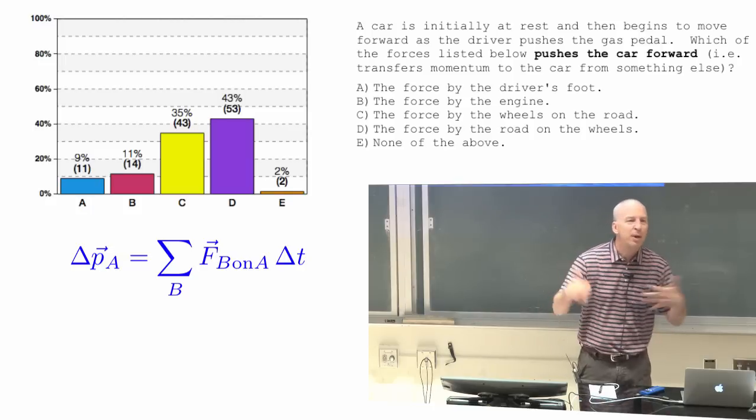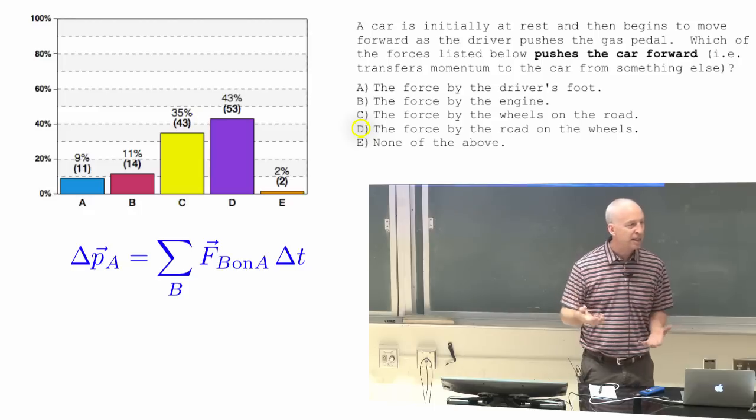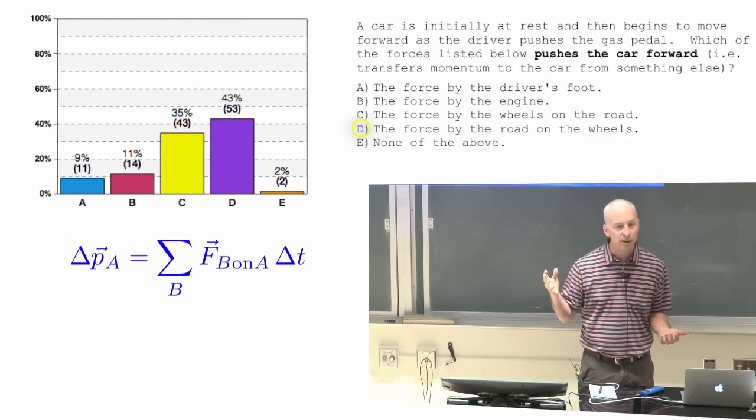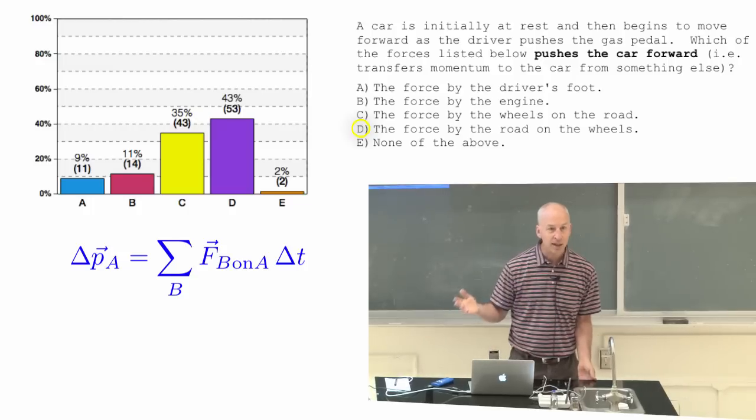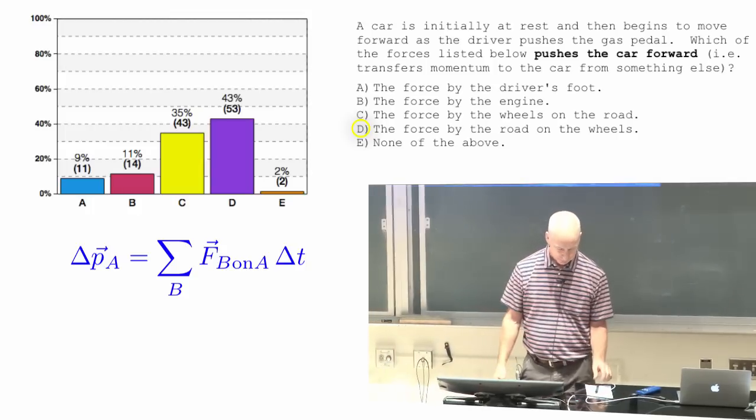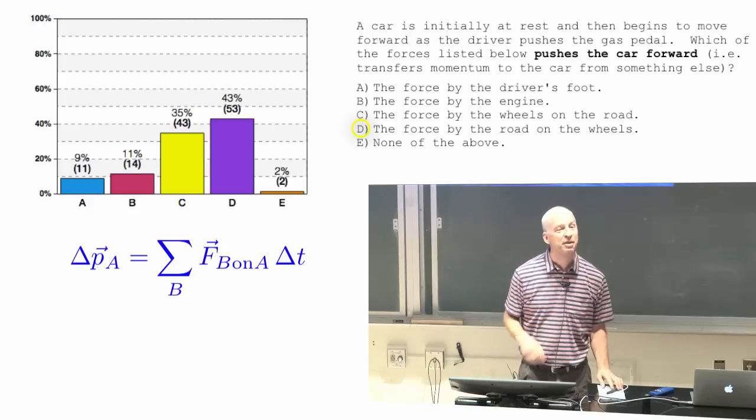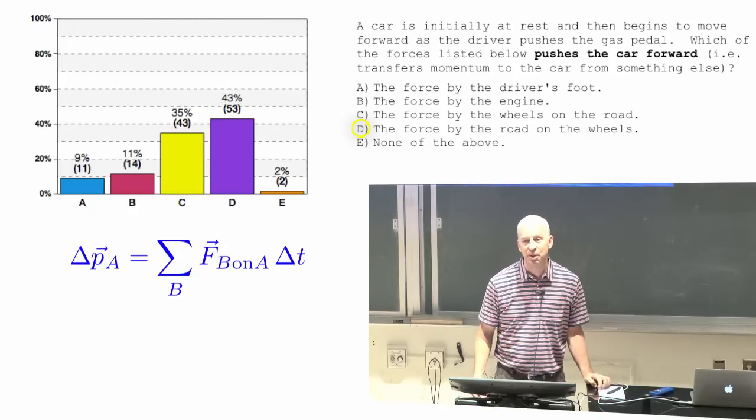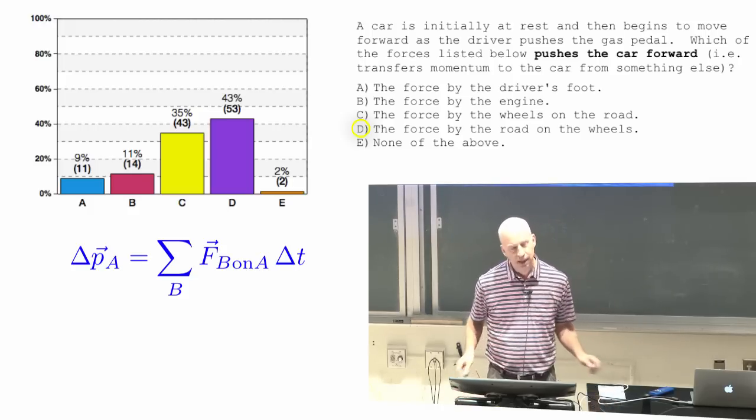As I said, the wheels are part of the car, the engine's part of the car. If you buy a car and it doesn't have an engine, you're going to feel cheated. If you buy a car and it doesn't have wheels, same thing. All those things are part of the car. And I'd like you to think of them as part of the car. So something else has to be pushing the car forward. And the something else that does it is the road.